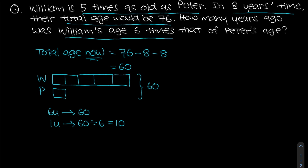The question asks how many years ago was William's age six times that of Peter's age. We first work out the age difference. The age difference is four units — that is, 10 times 4 — which equals 40.